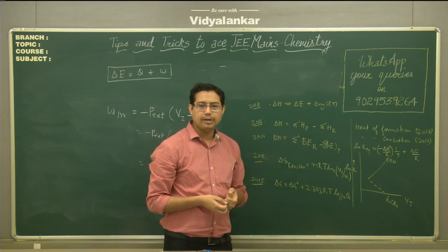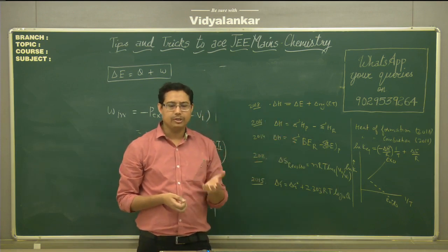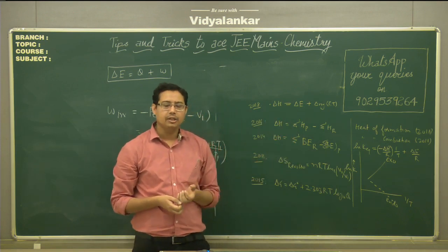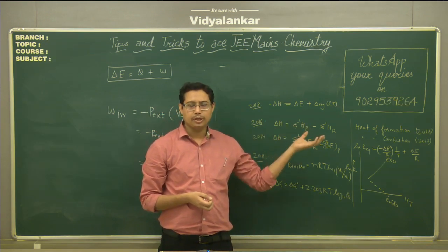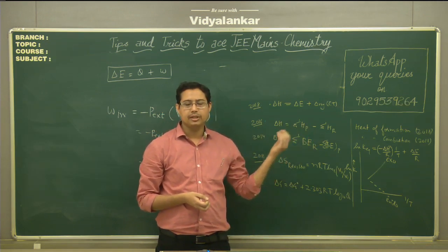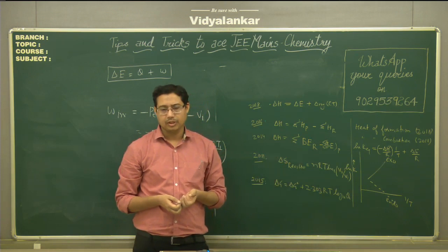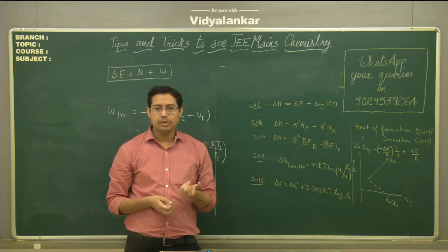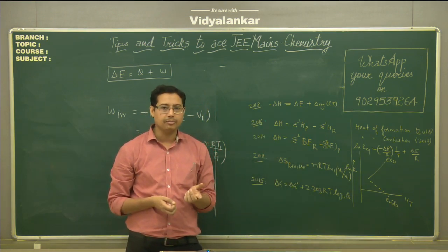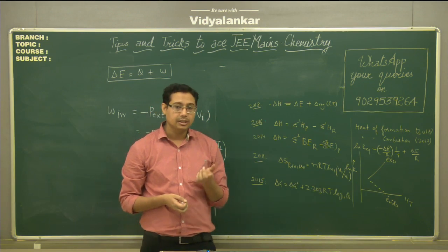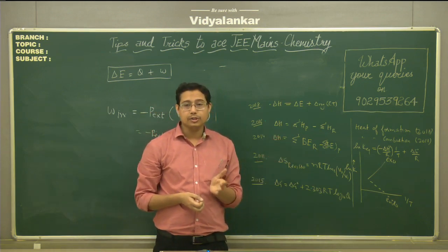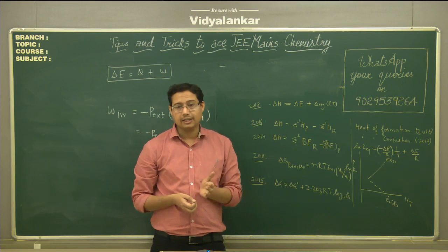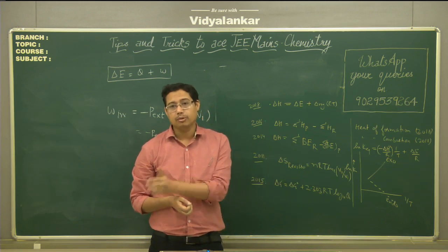Further common questions ask you to find out the enthalpy for a given reaction. Enthalpy change equals the summation of enthalpy of products minus enthalpy of reactants. If bond energies are given, then ΔH equals the summation of bond energies of reactants minus bond energies of products.